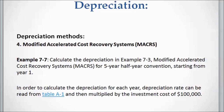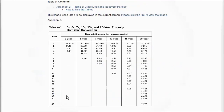Let's work on the example we used before. The asset is purchased at $100,000 with zero salvage value, and we are going to use the five-year half-year convention for calculating depreciation. We go to Table A-1 and read the rates from the five-year column: 20%, 32%, 19.2%, and so on.